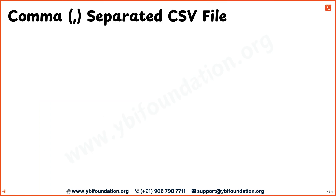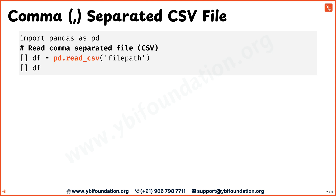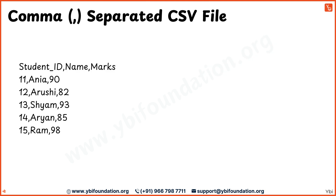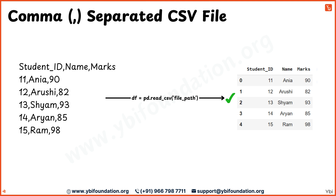Now let's understand how to read a comma-separated CSV file using the pandas library. First, import pandas as pd and use the pd.read_csv function, providing the file path or address. For comma-separated files, there is no need to define sep or separator — comma is the default separator for this function. For example, with a CSV file containing student data such as student ID, name, and marks, pandas will display the data in a neat tabular format just like a spreadsheet. You can then perform various operations on this data such as filtering, sorting, and analyzing it.